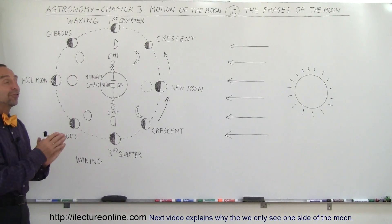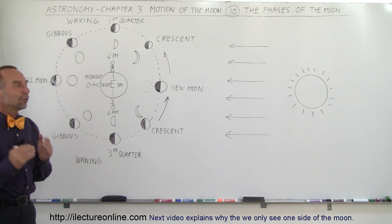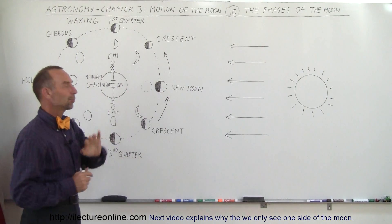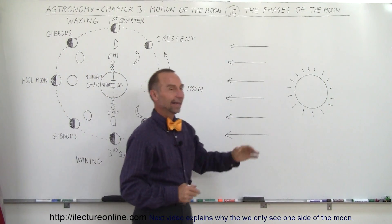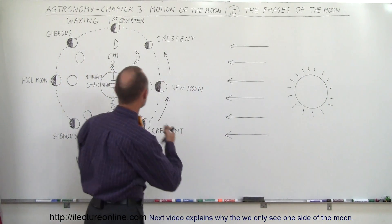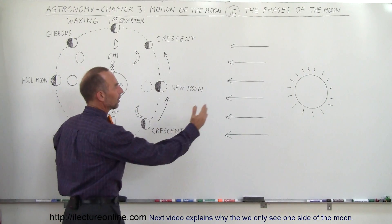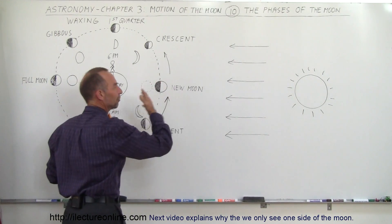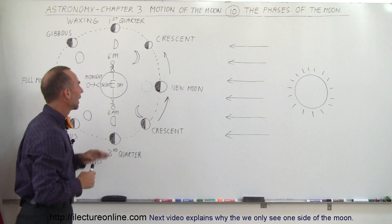Welcome to Electron Line. In this video we're going to talk about the phases of the Moon. Far away, 93 million miles away, is the Sun. The Sun is so big compared to the Earth and the Moon's orbit that the light pretty well comes in parallel from far away, coming from the Sun.